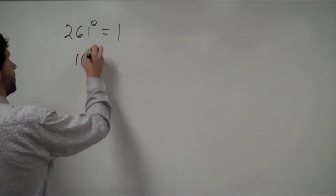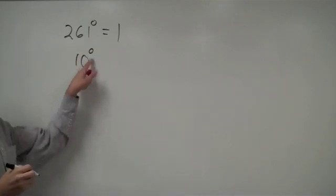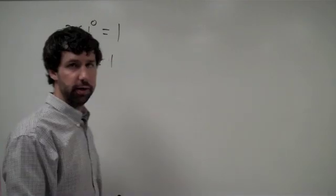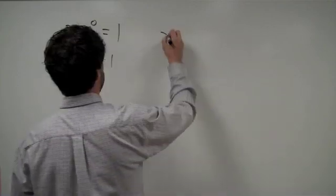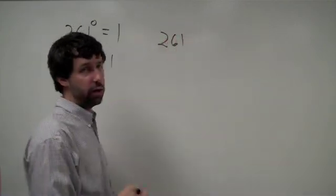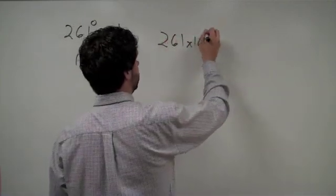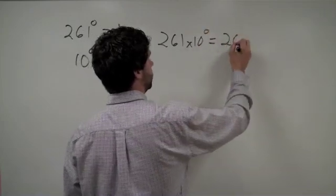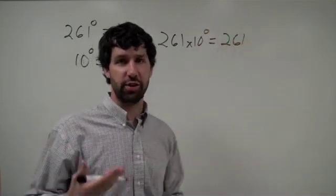For our purposes, we're going to be looking a lot at 10 to the 0, which also equals 1. So that means I can take a number like 261, for example, and I can multiply it by 10 to the 0, and that still equals 261. I have not changed the number at all.